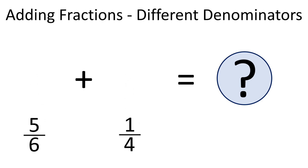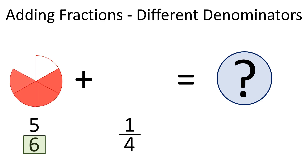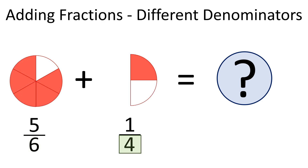In our example, one whole is divided into six equal parts, and the other whole is divided into four equal parts. The whole that was divided into six parts has more parts than the whole divided into four parts.